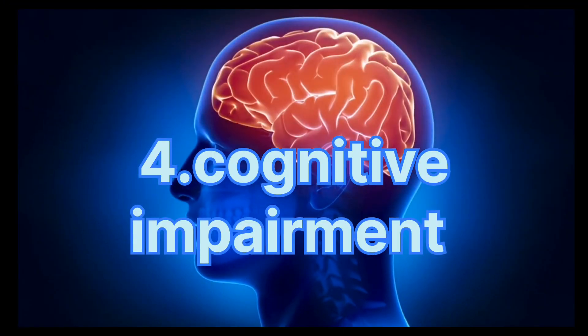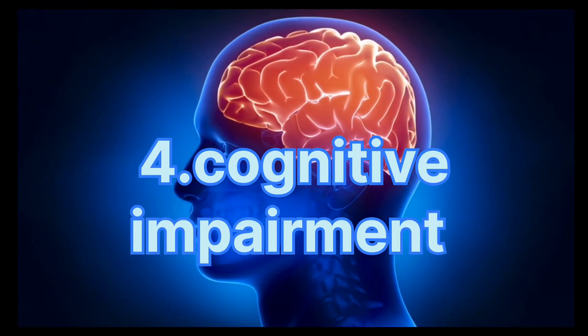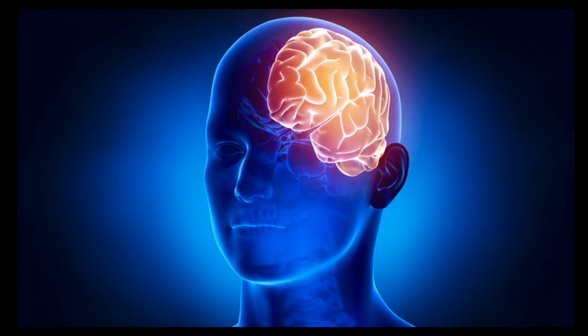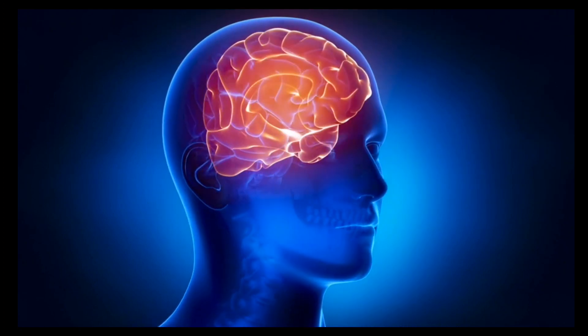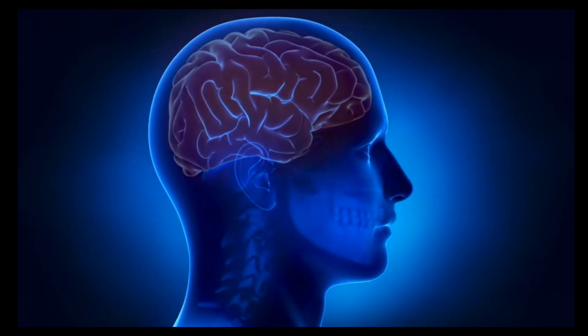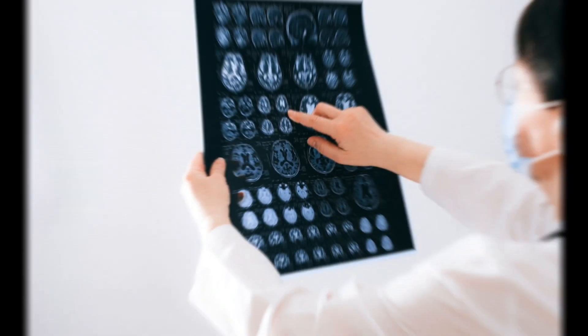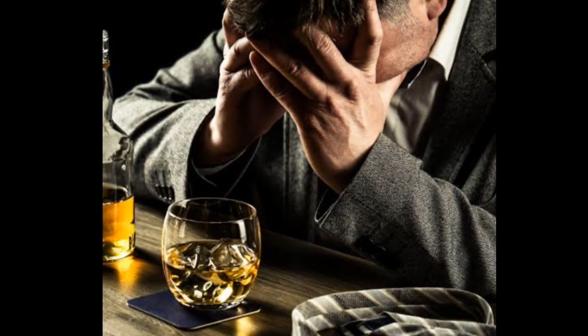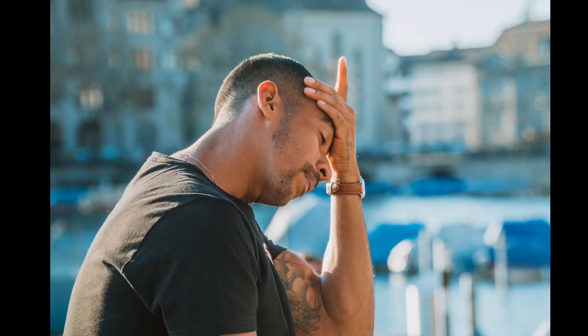4. Cognitive Impairment. Alcohol interferes with brain communication pathways and can affect the way the brain looks and works. Regular alcohol use can impair cognitive function, affecting memory, concentration, and decision-making.